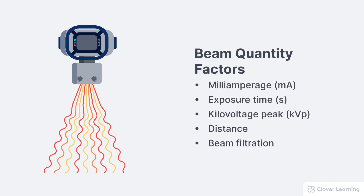The x-ray beam quantity is influenced by several factors, including the milliamperage (MA), exposure time, KVP, distance — specifically the distance from the radiation source to the point of measurement — and filtration. Changes to these variables have very predictable and measurable effects on the quantity or intensity of the x-ray beam.